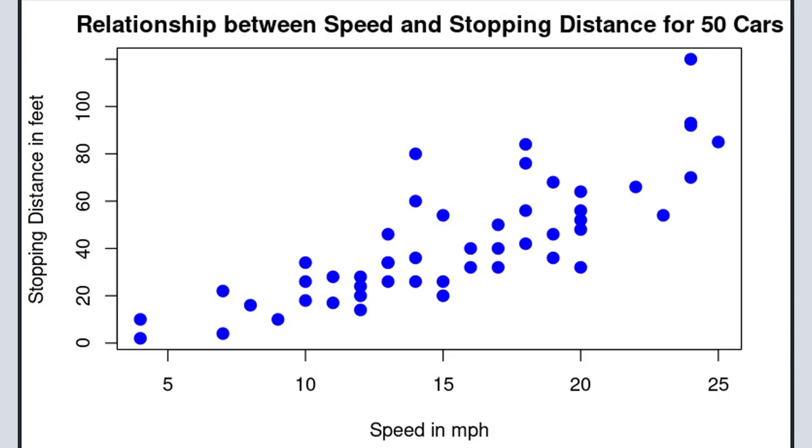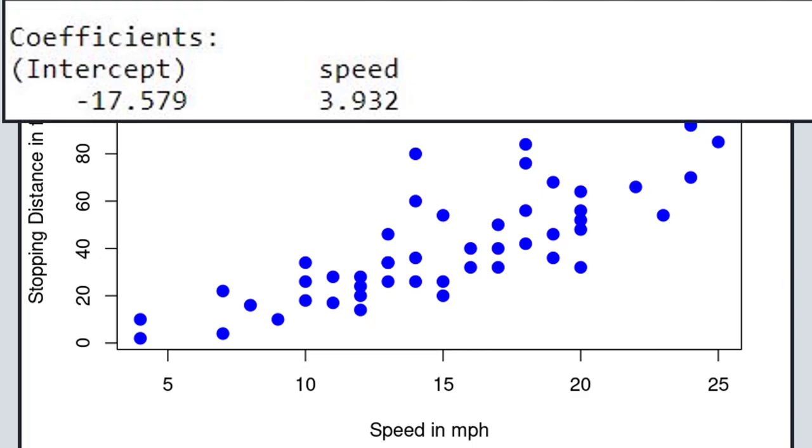So here's the example we're going to look at: speed in miles per hour and stopping distance in feet for 50 cars. You can see that this is a fairly tight pattern and it's linear.